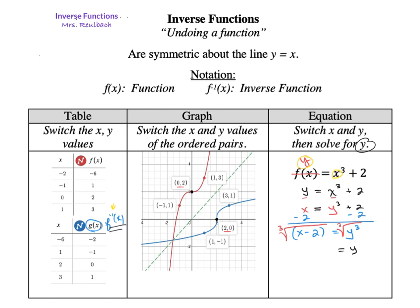That will give us y by itself. So y equals the cube root. Remember, we cube rooted all of this because we had to do the negative 2 first. And then last but not least, we're going to write it in inverse notation. If that's f(x), this is f inverse of x, and that equals the cube root of x minus 2. And that's how you find an inverse function.